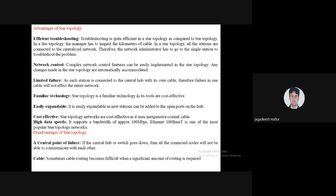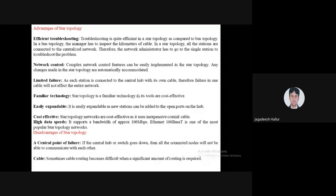Disadvantages of star topology: once the central server fails, we cannot do anything — all hubs, switches, and computers go down and there is no network. We have to wait until the server comes back up. Cable routing is difficult and costly — you have to route cables from computer to hub to central server, so the initial cable cost is very high. Star topology is the most commonly used topology.